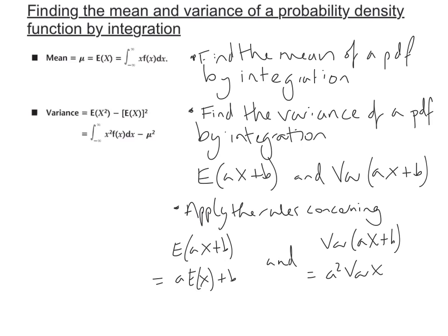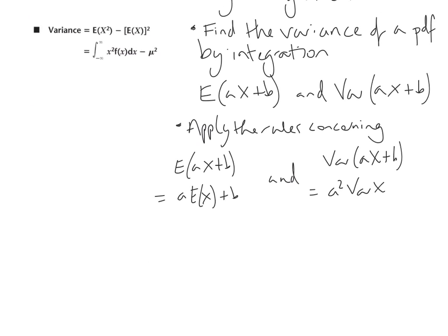The first thing we're going to look at is finding the mean of a PDF by integration. The mean, also written as mu or the expectation of X, is found by integrating x·f(x) between both limits. So you integrate the entire PDF multiplied by X. Let's apply that to a question.